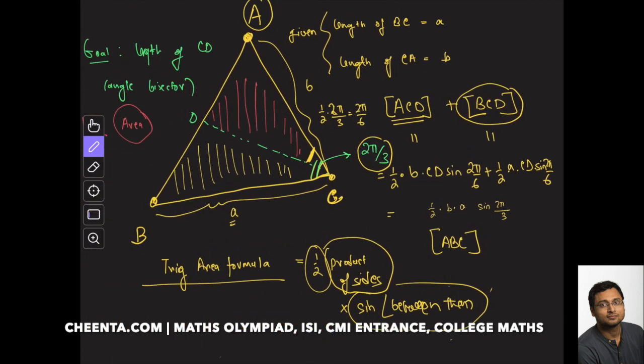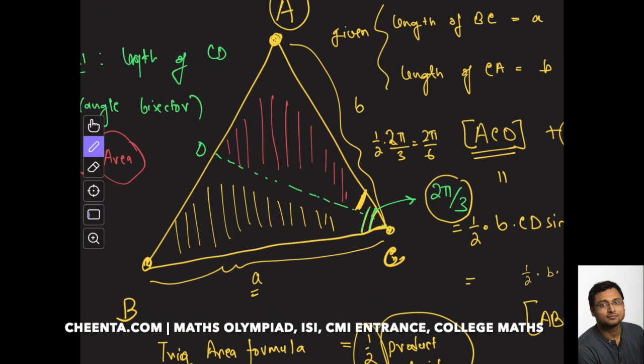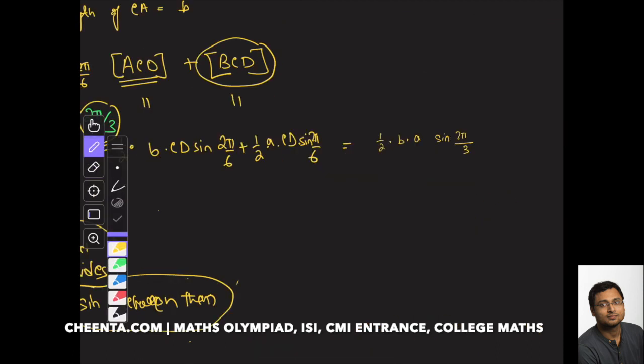If you look at the diagram, it will be clear. ABC's area is half of b times a times this angle in between, which is sine of 2π by 3. We can take half of sine of 2π by 6 times CD common.